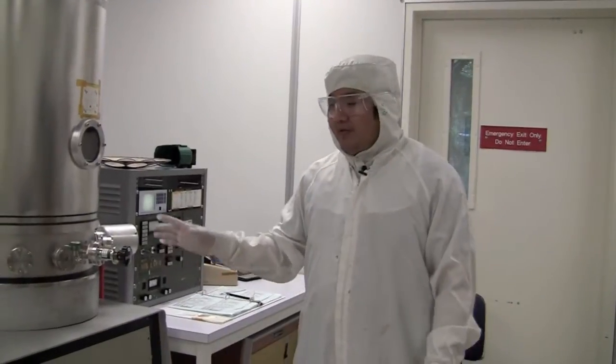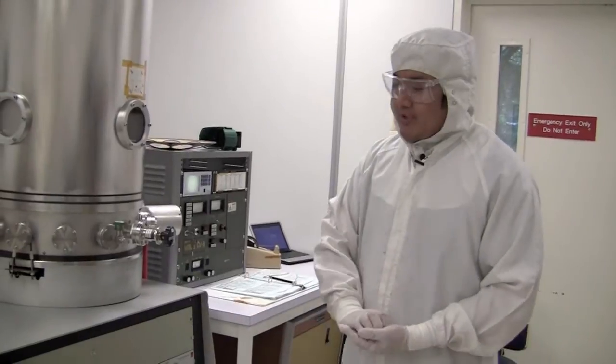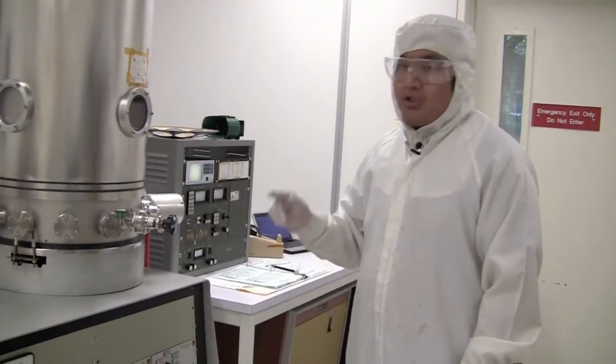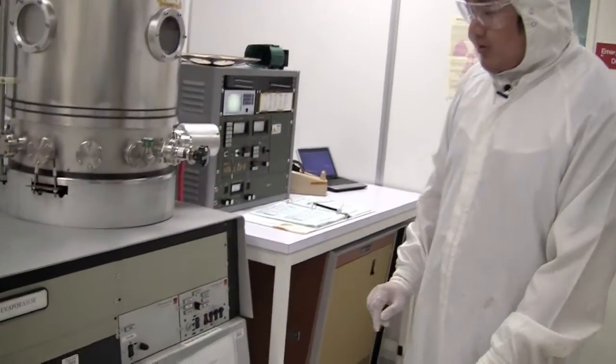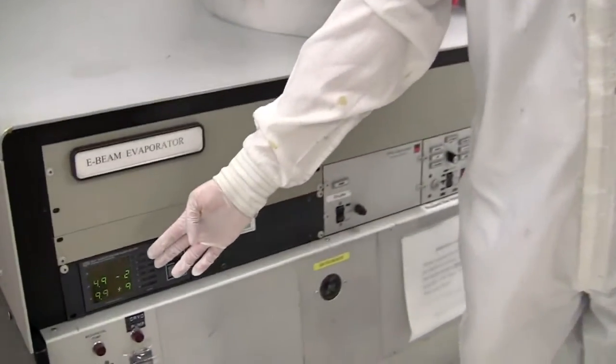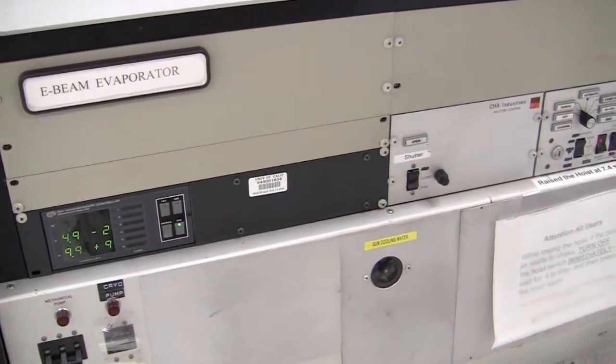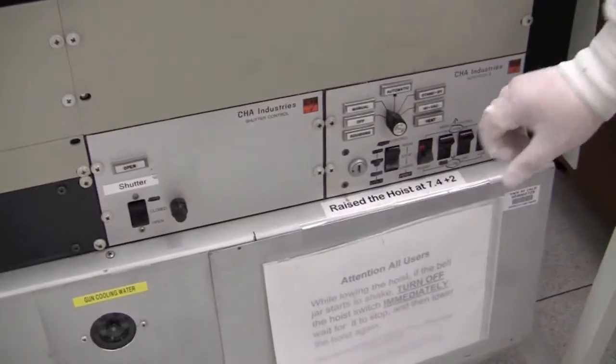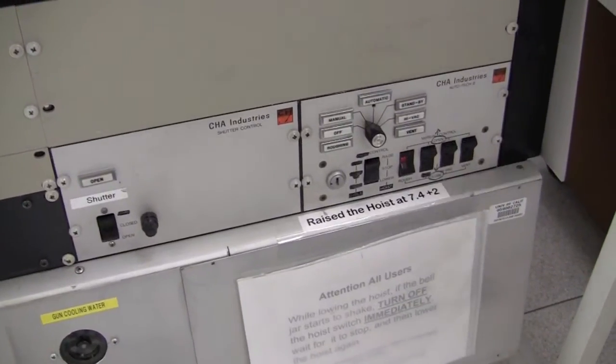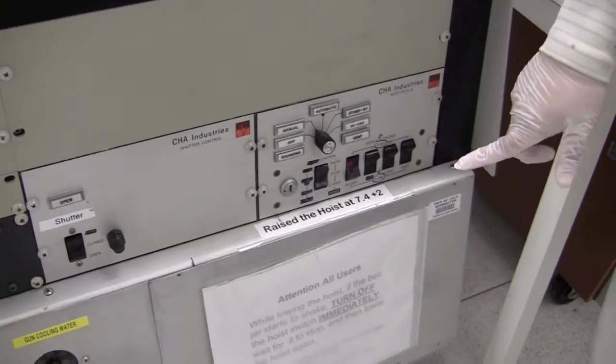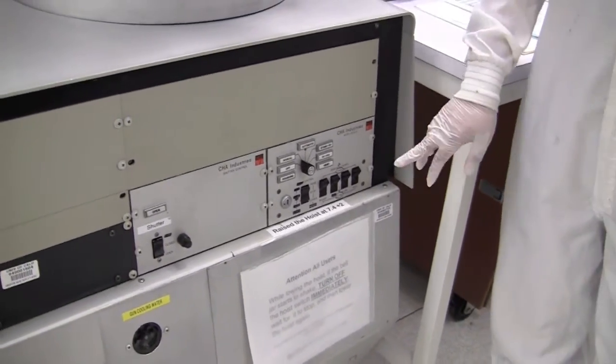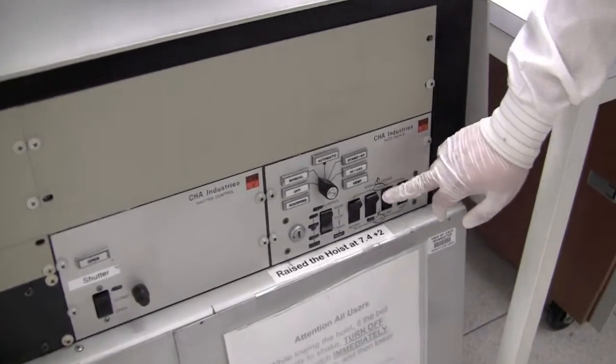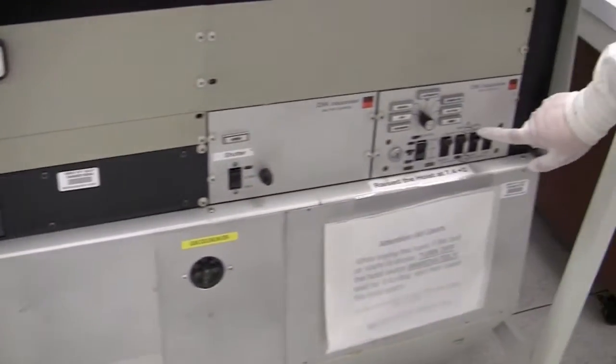So after the roughing pump has brought the pressure down to below 50 millitorr, we can switch the mechanical pump off for the roughing and turn on the high vac. So what we do is we look at the pressure, it's under 50 millitorr, and now we're going to turn the rough off. But once we turn it off we wait a little bit for the actuation of the valve to make sure it's closed, and then we turn the high vac on. When we turn the high vac on you should see the pressure drop.